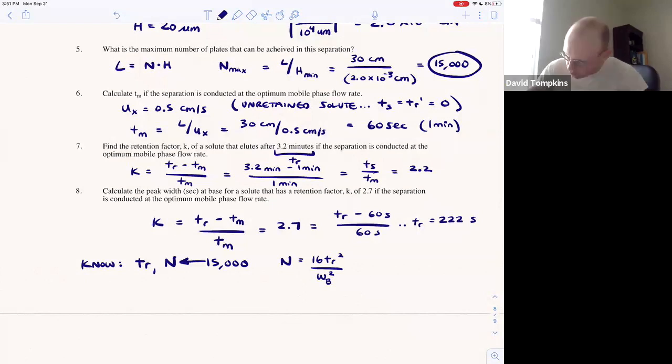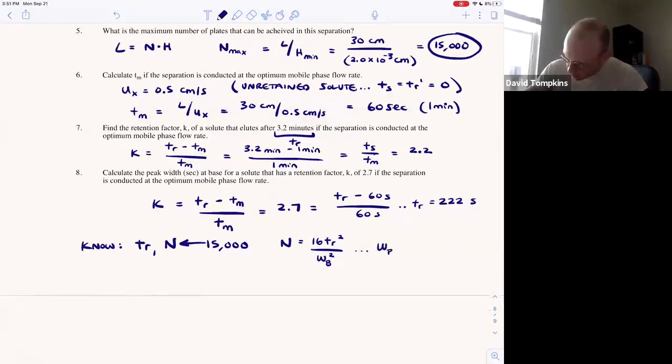And we can rearrange this and say that the width of the base is equal to 16 times TR squared over the number of plates, all raised to the one half or square root of that.